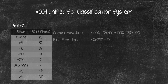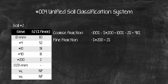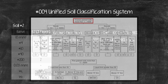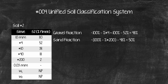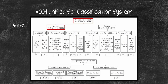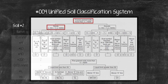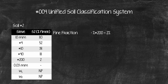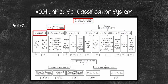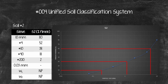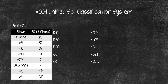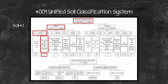Soil No. 2: The coarse fraction is larger than the fine fraction, so it is a coarse-grained soil. The sand fraction is larger than the gravel fraction, so it falls under the sand category. The fine fraction is under 5%, so it is either SW or SP. Checking the particle size chart for D10, D30, and D60, Soil No. 2 is classified as SP based on the Cu and Cc values.